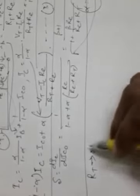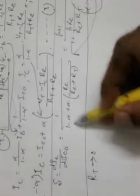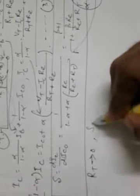Converting to beta form, this becomes: S equals (beta plus 1) divided by (1 plus beta times RE divided by (RE plus RT)). This is the expression for the stability factor for the voltage divider circuit. As RT tends to 0, S tends to 1, which is the ideal case. For finite values of RT, S is greater than 1.